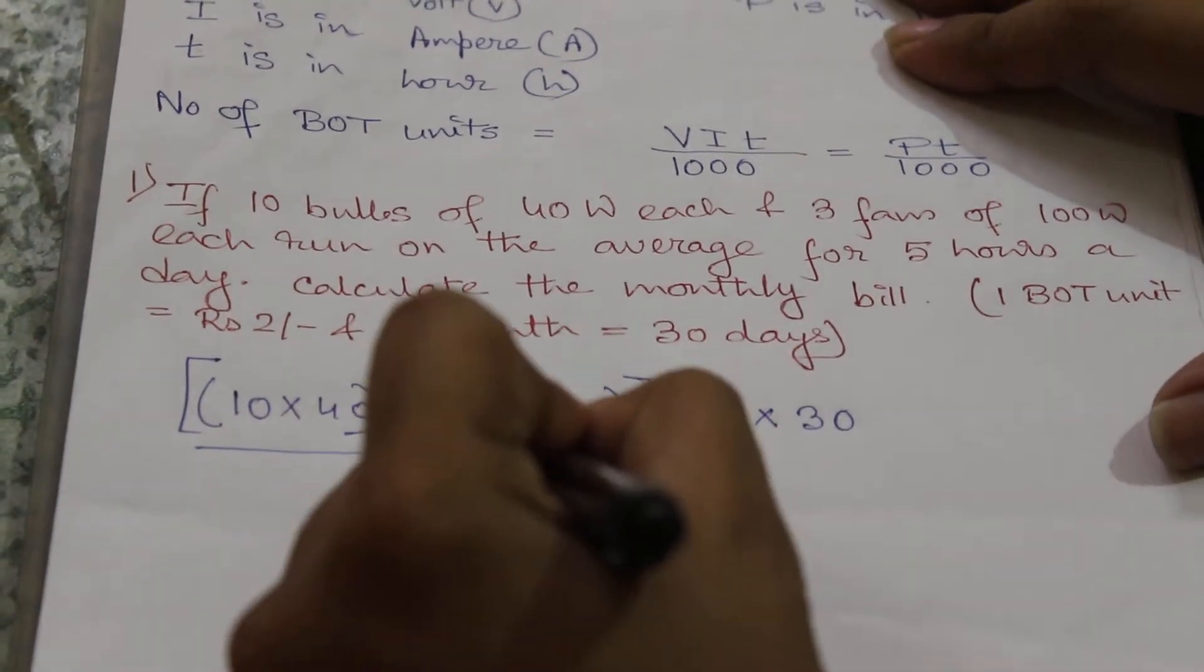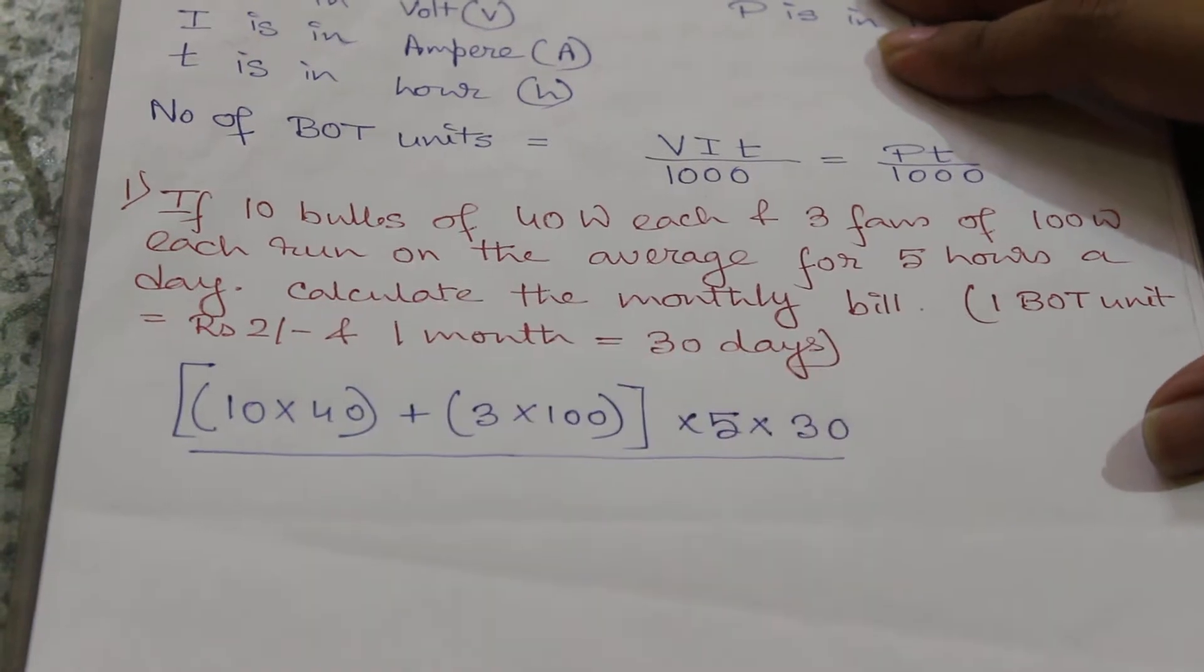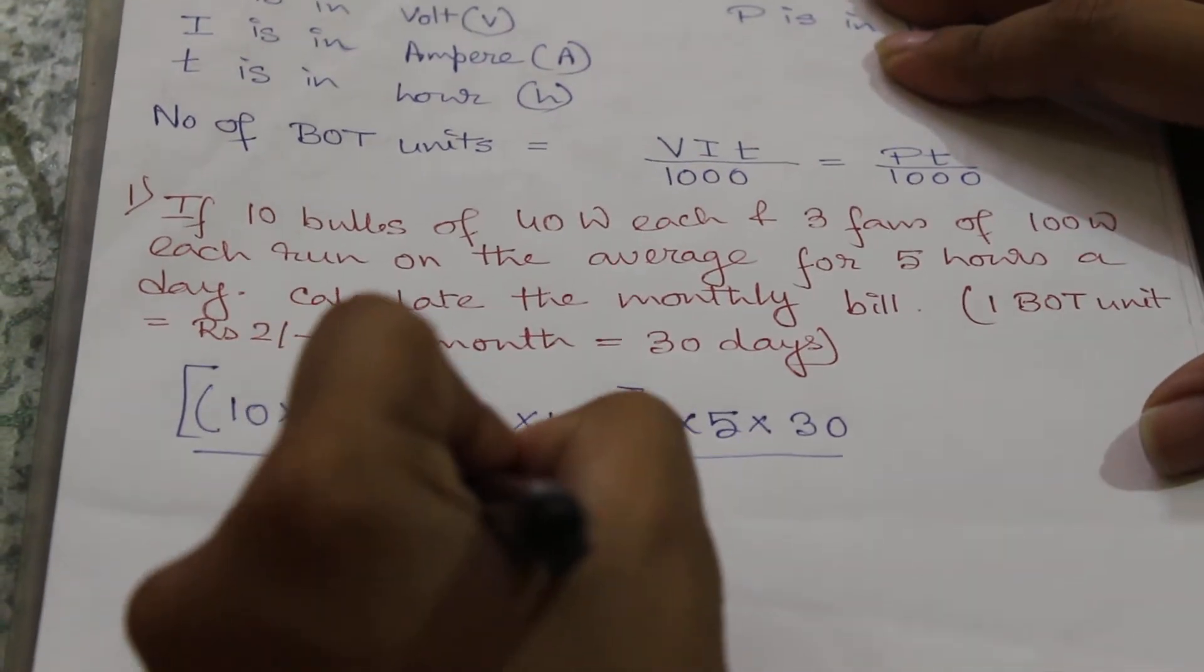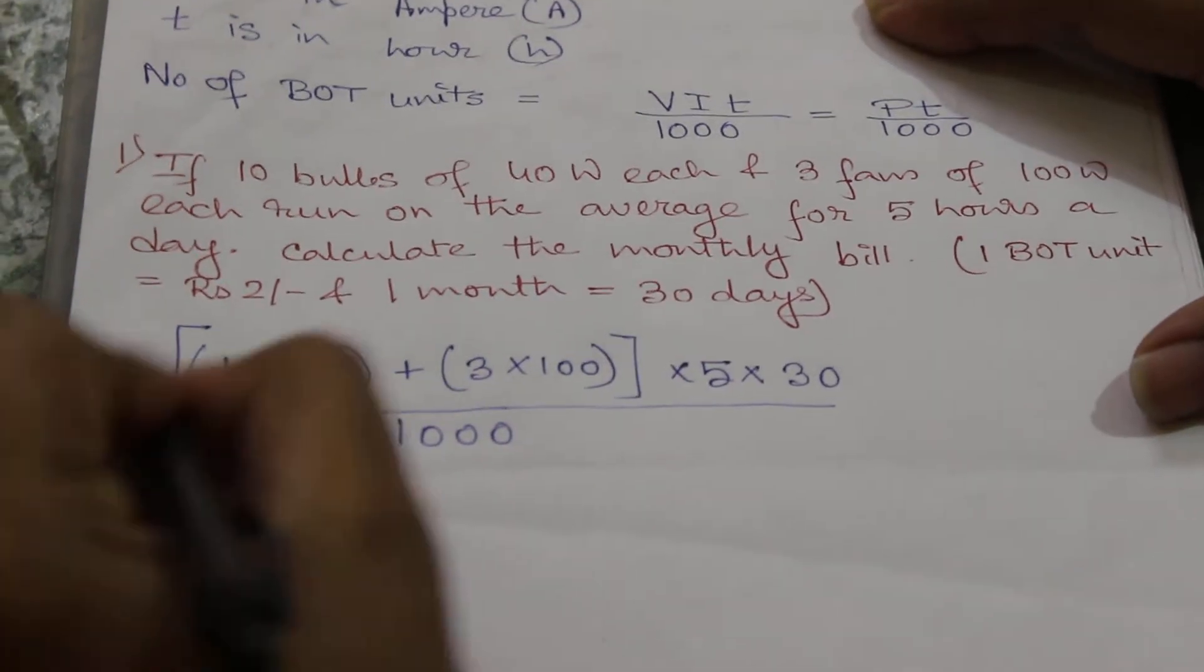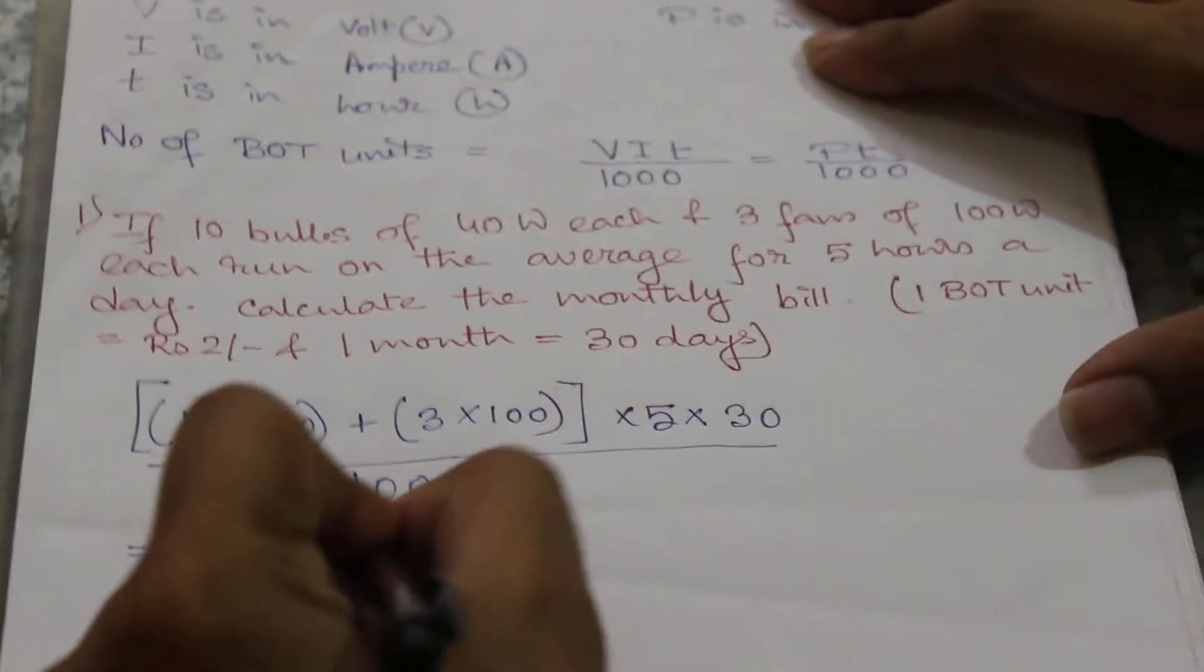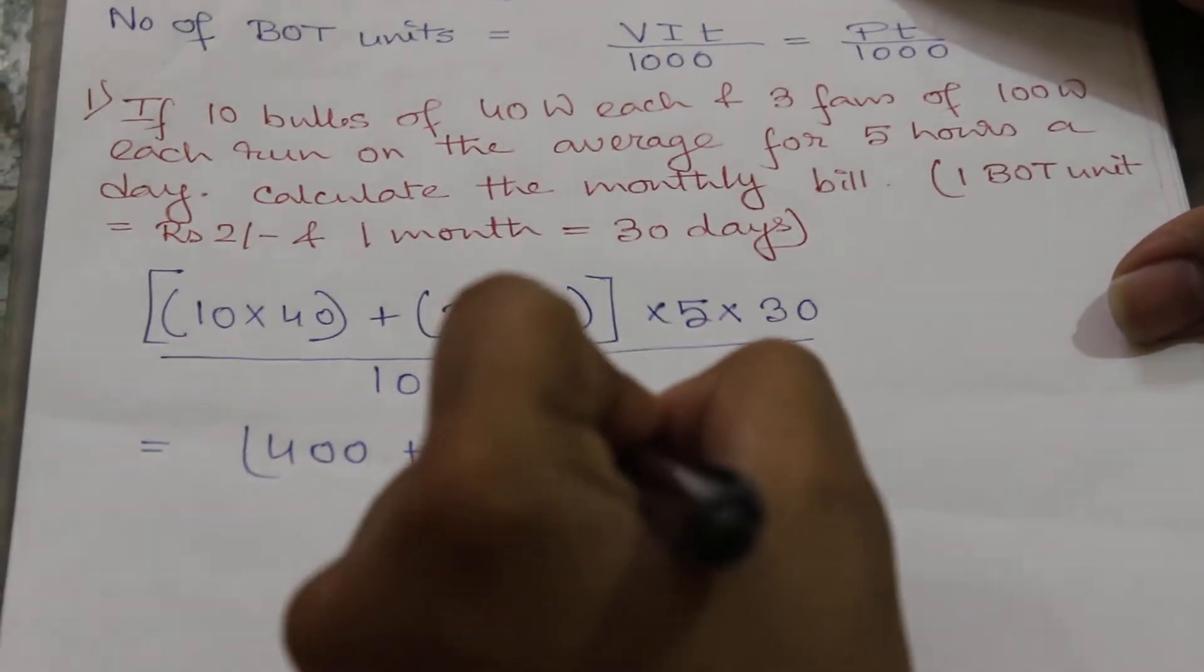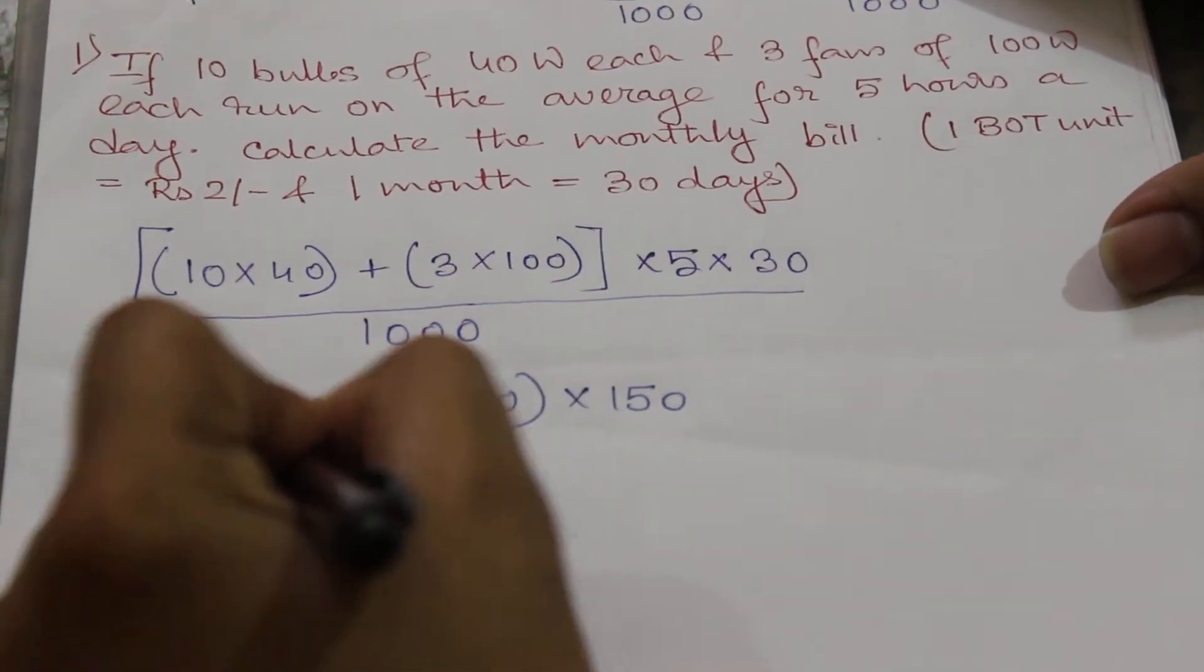Now number of BOT units will be equal to this whole thing by 1000 as discussed here. So if we solve this, this will be equal to 400 plus 300 into 150 by 1000.